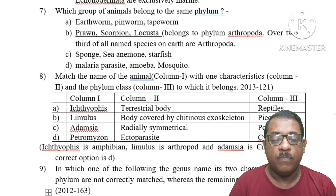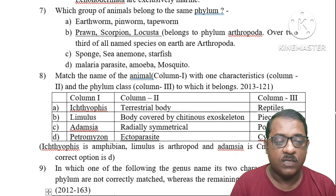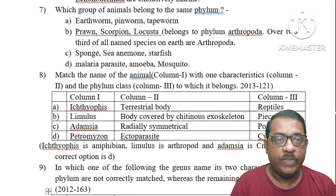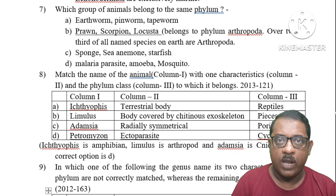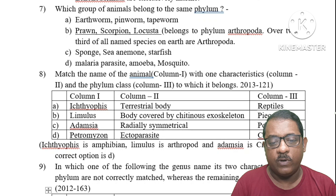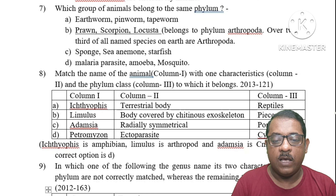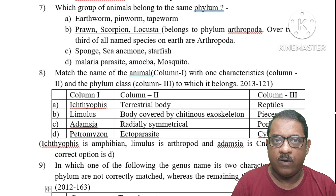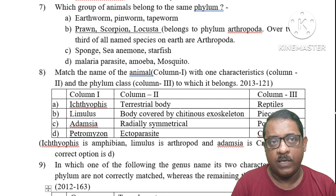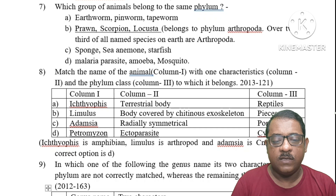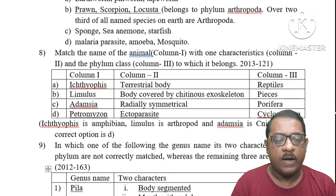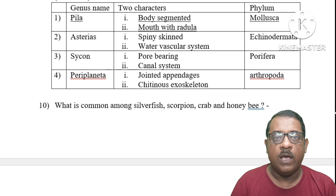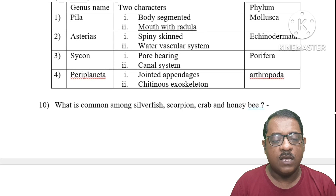Question 8: Match the name of the animal in Column A with its characteristics in Column 2 and its phylum/class in Column 3. Option A states Ichthyophis is a terrestrial reptile — but Ichthyophis is actually a limbless amphibian. Limulus is an arthropod and Adamsia is Cnidaria. The right answer is Option D: Petromyzon, which is Ichthyophis within class Cyclostomata.